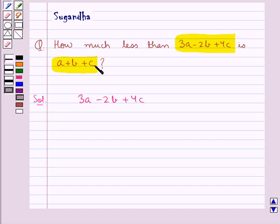For that we will subtract a plus b plus c from 3a minus 2b plus 4c. We will write this expression a plus b plus c below this given expression 3a minus 2b plus 4c in such a way that the like terms come under one column.